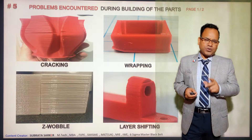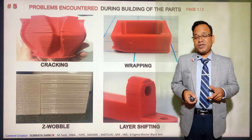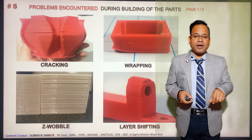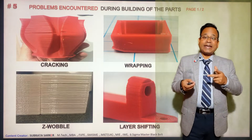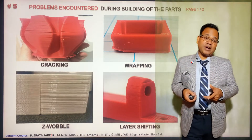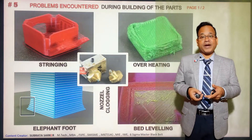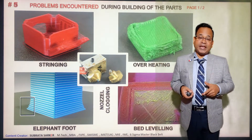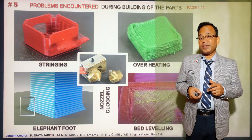So, steps one through four are related to creating a perfect and accurate 3D CAD model as input for the manufacturing process. Now I will discuss what happens during the building of the component — what kind of problems arise. There are about eight or nine issues: cracking, warpage, Z-oblique, layer shifting, stringing, overheating, elephant foot, bed leveling issues, and nozzle clogging during the building process.